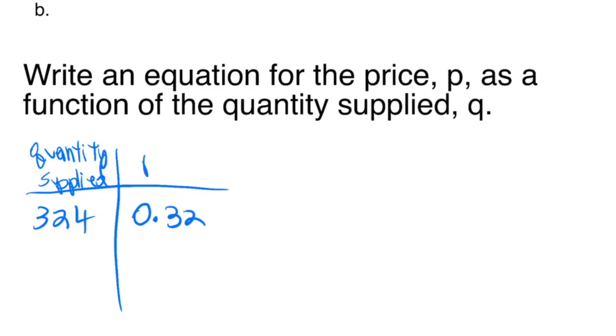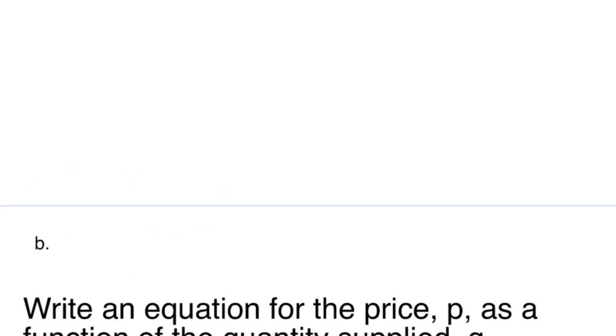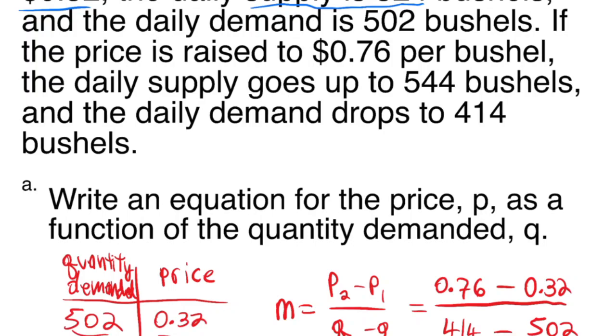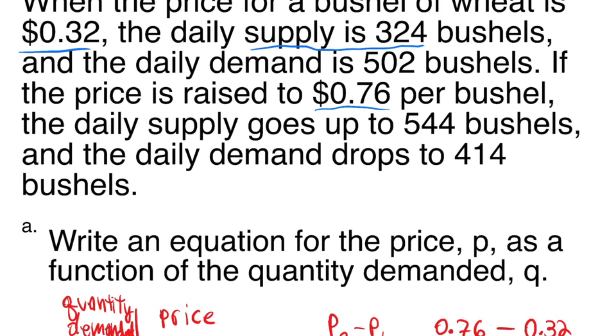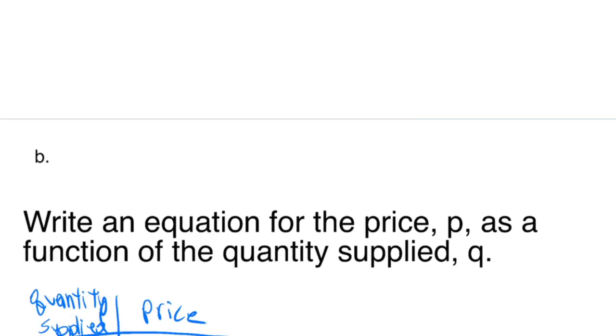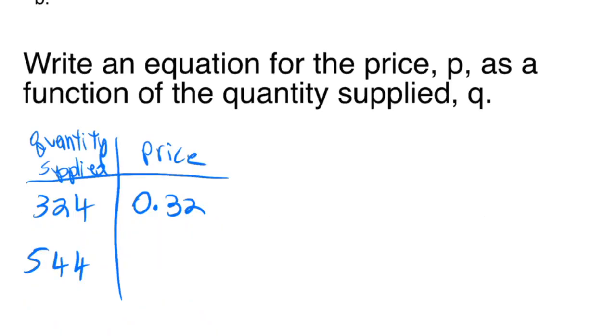Again, the other information is that if the price is $0.76, then the daily supply is 544. So that's 544 for the daily supply, or the quantity supplied, and $0.76 for the price.